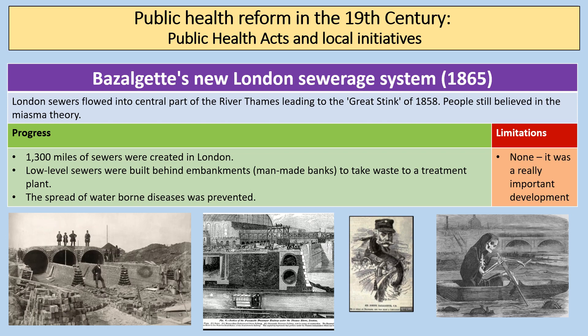Joseph Bazalgette was an engineer who wanted to create a sewage system in London. London's sewers flowed into the central part of the River Thames, leading to the Great Stink of 1858 — seen in the 'Silent Highwayman' cartoon — where the Thames smelt so bad that Parliament had to leave for the summer. Because people believed in the miasma theory, this was the spark for Bazalgette's new London sewage system. 1,300 miles of sewers were created; low-level sewers were built behind embankments to take waste to a treatment plant, preventing the spread of waterborne diseases. When the cholera outbreak came in 1865–66, London was much less badly affected than other cities.